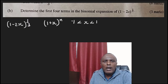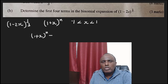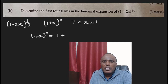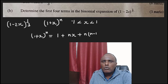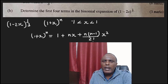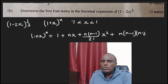For the general expansion of 1 plus x raised to power n: the first term is 1, the second term is n multiplied by x, the third term is n multiplied by (n minus 1) over 2 factorial multiplied by x squared, and the next term is n multiplied by (n minus 1) multiplied by (n minus 2) multiplied by x cubed over 3 factorial.